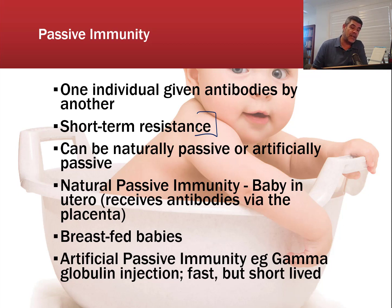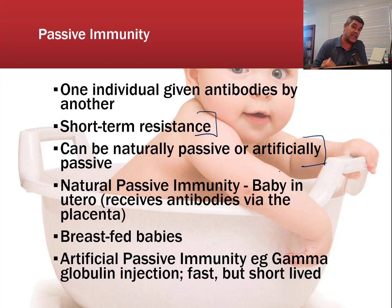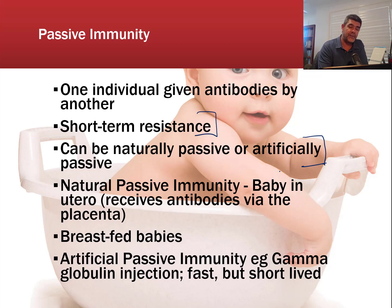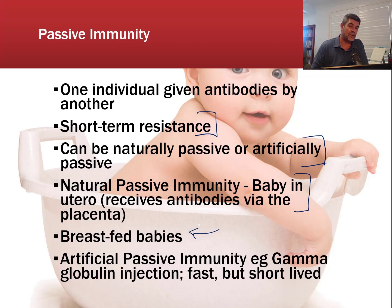Passive immunity can be naturally passive or artificially passive. Naturally passive means receiving antibodies from your mother, either in utero or during breastfeeding. Artificially passive means receiving an injection of antibodies isolated from someone who has already been infected with a particular virus and produced antibodies — those antibodies are transferred to you. Babies in utero receive antibodies via the placenta, and artificially passive immunity comes from gamma globulin injections or antibody transfers from one individual to another.